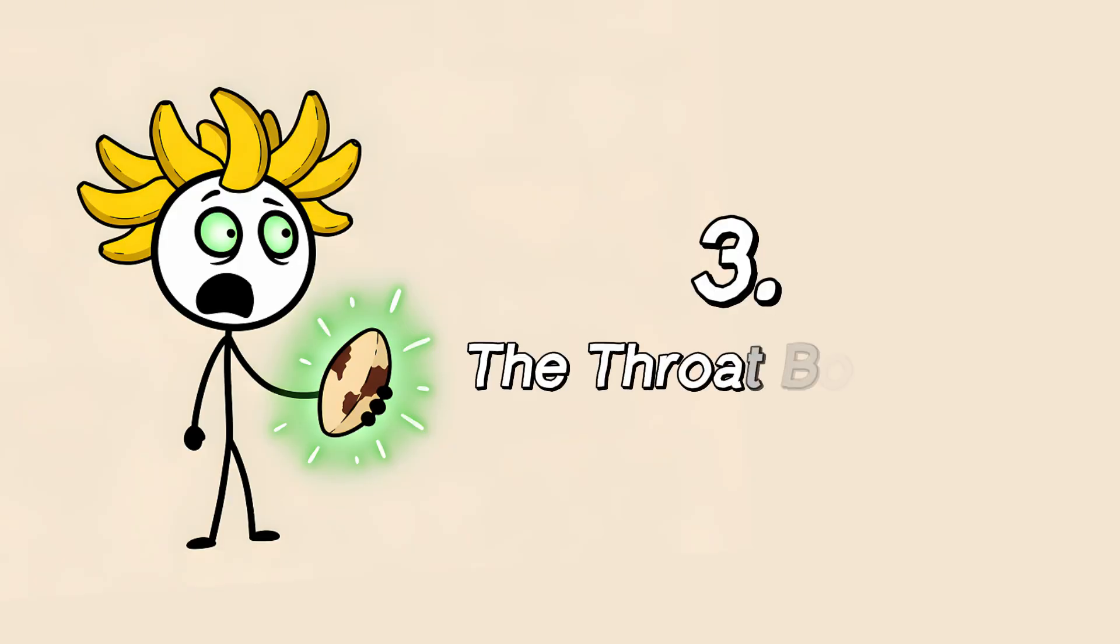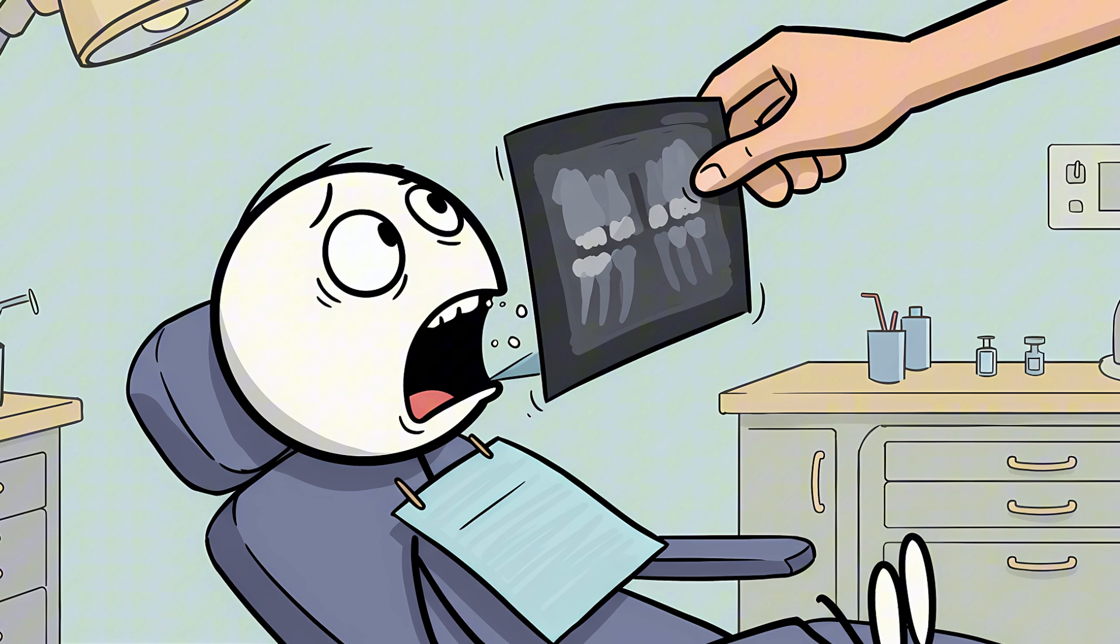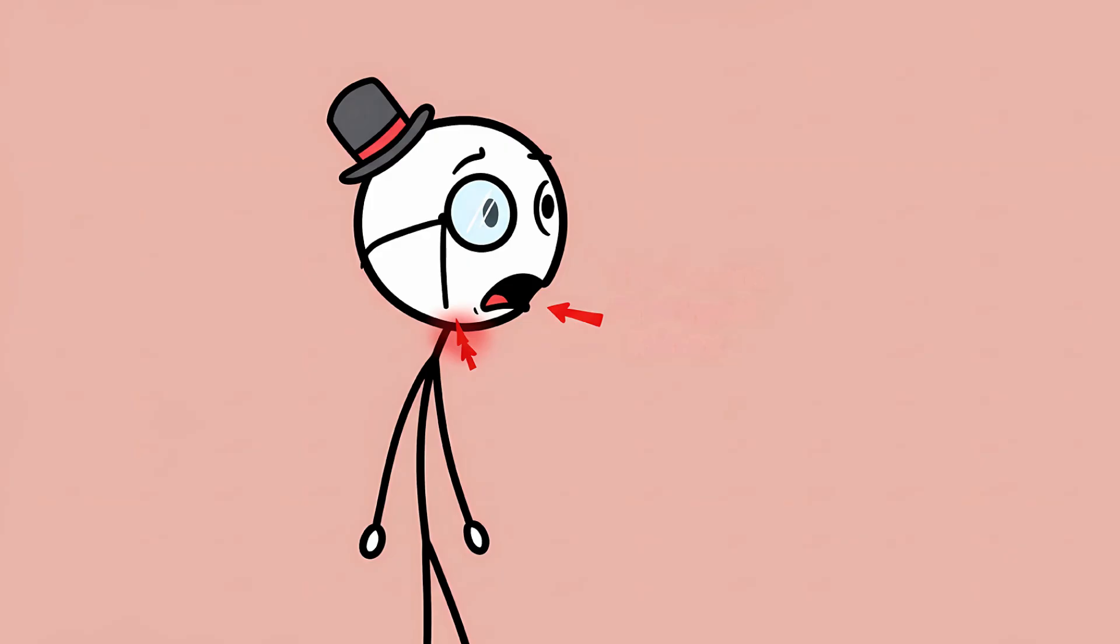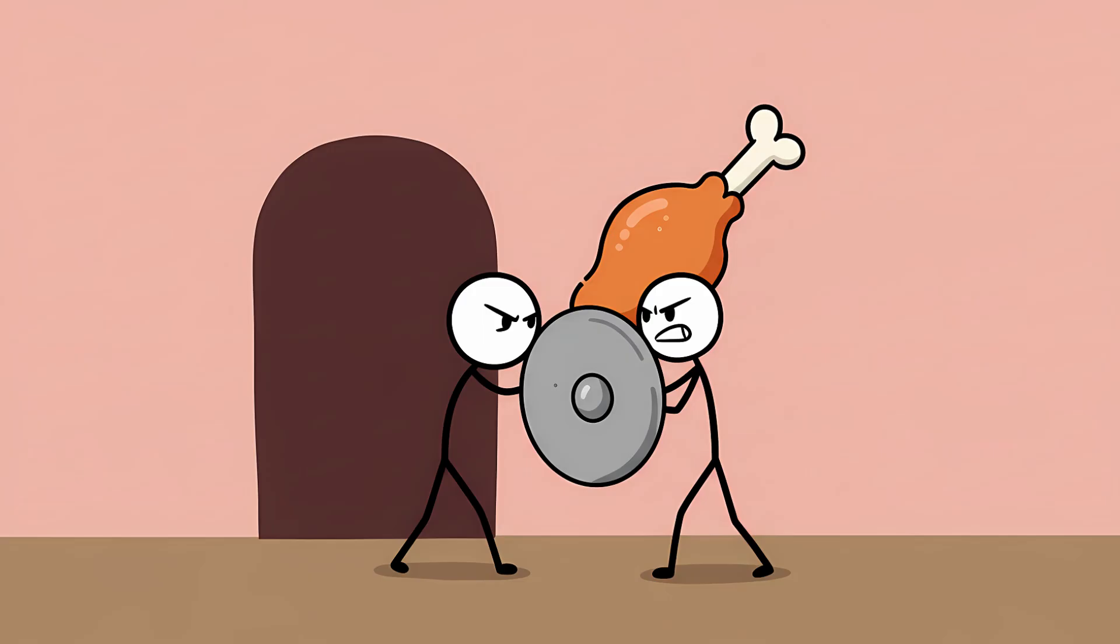Number three, the throat bouncer. You know that feeling. You're at the dentist, and they're trying to take an x-ray of your back molars with a piece of plastic the size of a credit card. Or maybe you accidentally touch the back of your tongue with your toothbrush. Instantly, your throat clenches, your stomach lurches, and your entire body conspires to violently eject whatever is offending it. This is the gag reflex, or the pharyngeal reflex if you're feeling fancy. It's your body's last line of defense against choking.